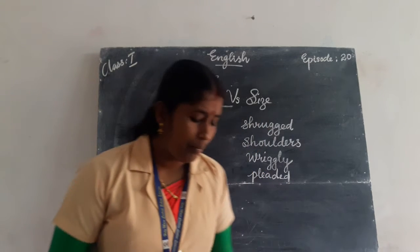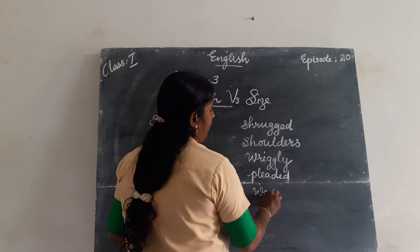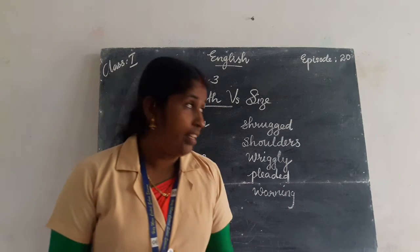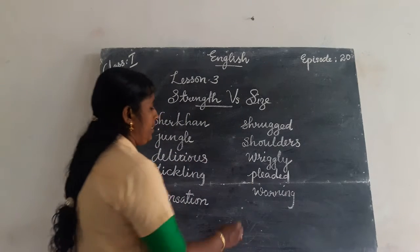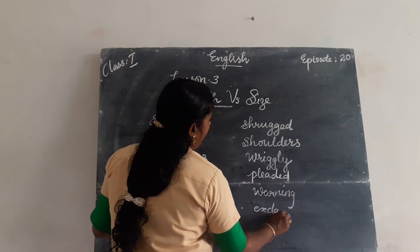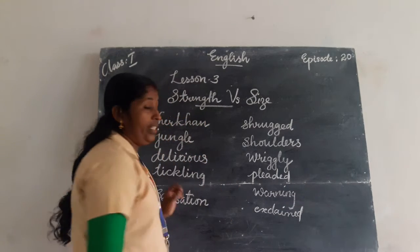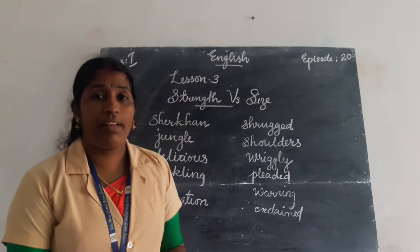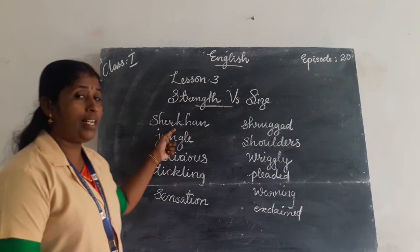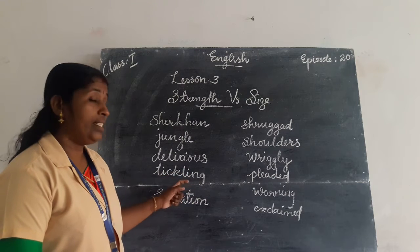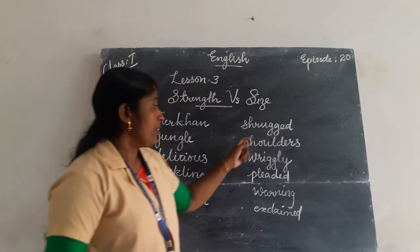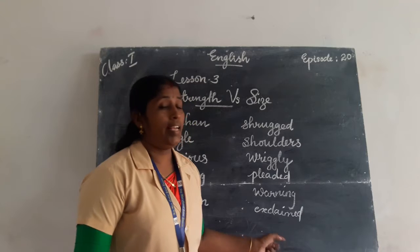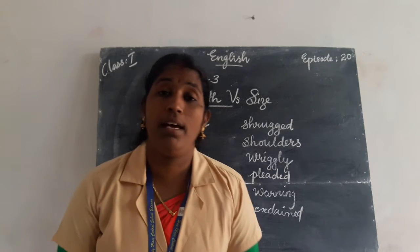Next word is exclaimed — E-X-C-L-A-I-M-E-D. Are you familiar with these words? I will read them once more: Shere Khan, jungle, delicious, tickling, sensation, shrugged, shoulders, wriggly, pleaded, warning, exclaimed. These are the new words from the first portion.